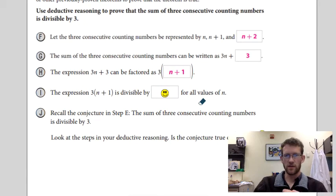The expression three times n plus one is divisible by three for all values of n. Therefore, the sum of three consecutive counting numbers is divisible by three, right? We've proved this now using a series of logical steps.